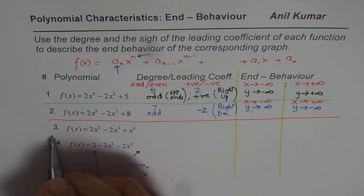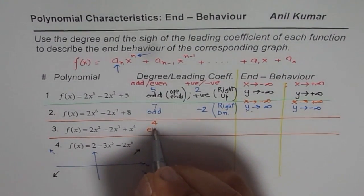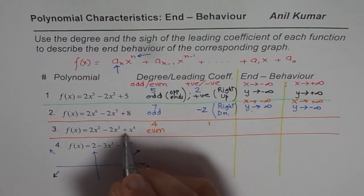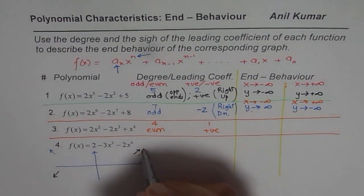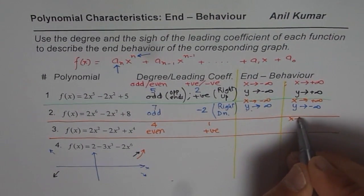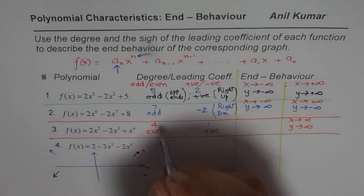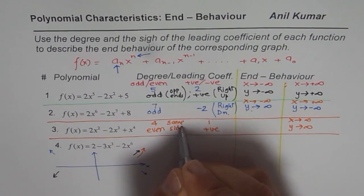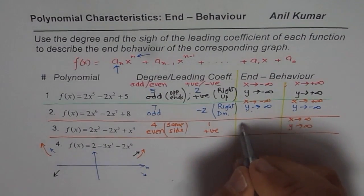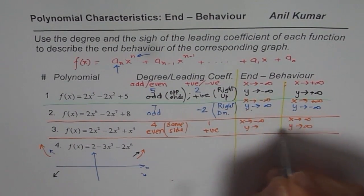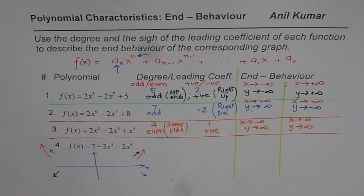Let's look at the next one. The degree here is 4, and 4 is even. The coefficient is 1, which is positive. Positive means 'right side up' — so when x approaches positive infinity, y also approaches positive infinity. Even degree means same ends, not opposite ends. So if the right side goes up, the left side also goes up. Therefore, when x approaches negative infinity, y also approaches positive infinity.